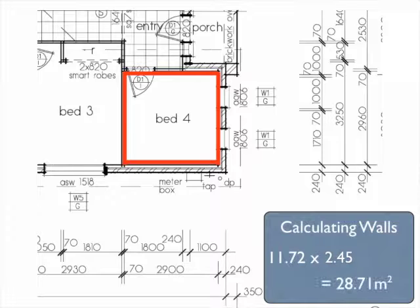So the area of the walls for bedroom 4 would be the perimeter of 11.72 metres, multiplied by the height of the ceiling, 2.45 metres, making the wall area 28.71 square metres.